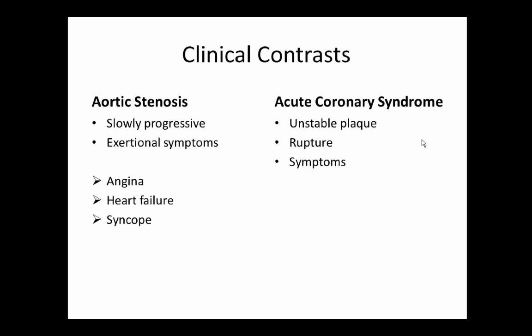Take the whole clinical picture in mind. Aortic stenosis is slowly progressive, with exertional symptoms that are usually better at rest. The classic triad is angina, heart failure, and syncope. With acute coronary syndrome, you have an unstable plaque that ruptures, and symptoms are harder to get rid of — those are the people sitting watching TV and developing chest pain. Clinically the presentations are pretty different. Take a good history and physical exam to identify physical findings.